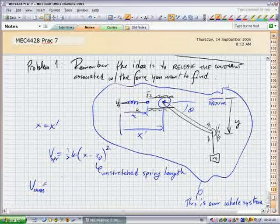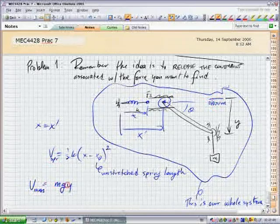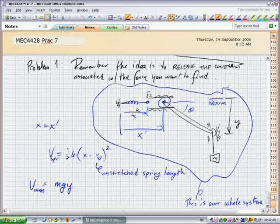Then the potential energy due to the mass is mgy.